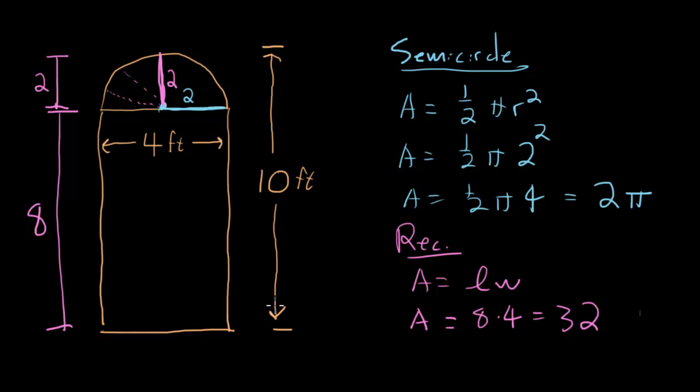So the area of our entire window, well, that's the rectangle section, which is 32, and it's the semicircular section, which is 2π. So the whole window is just 32 + 2π, which shows up in answer choice E.